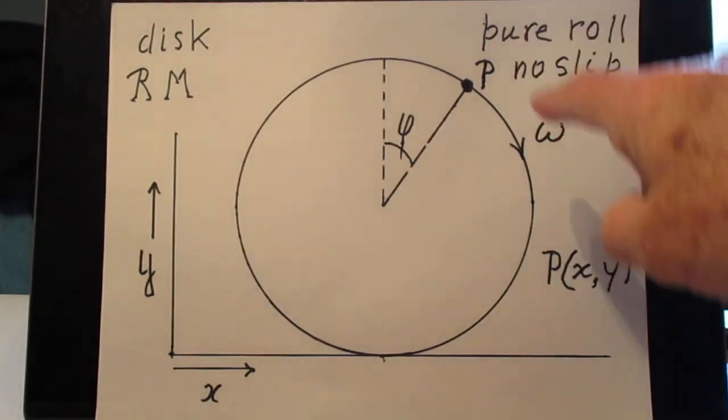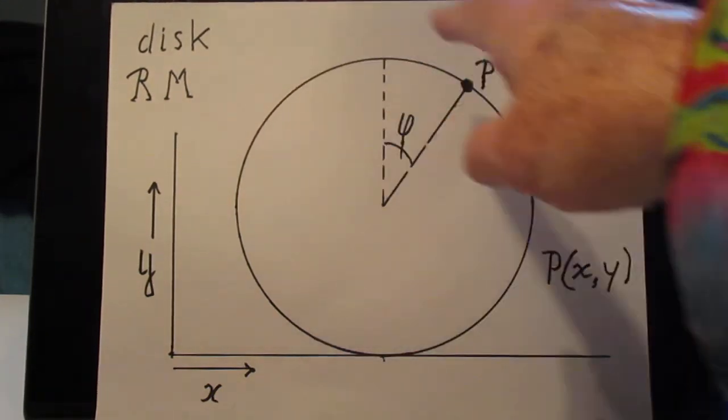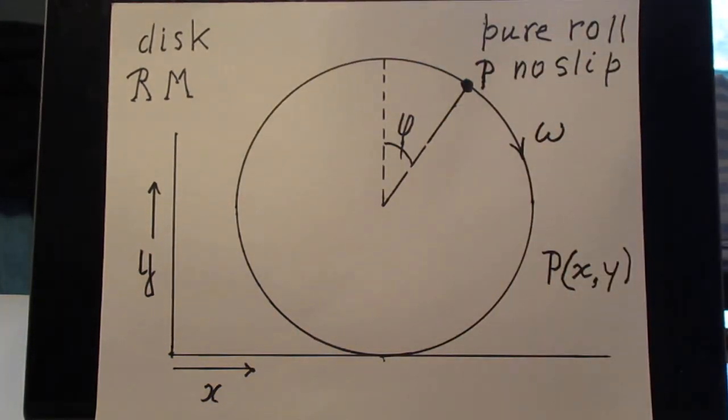And this disk, rotating in this direction, is going in this direction, is in pure roll condition, no slip.